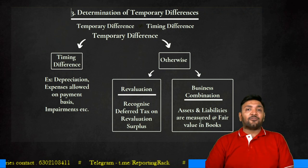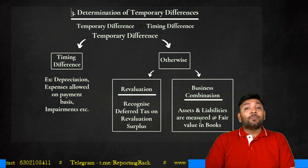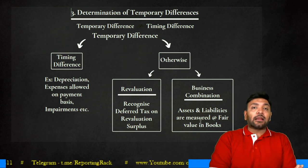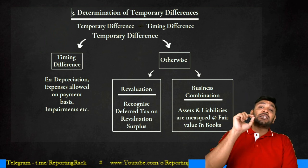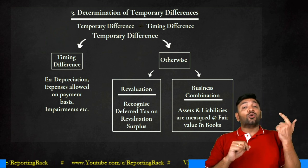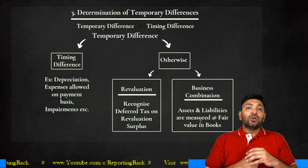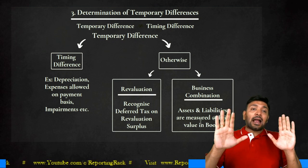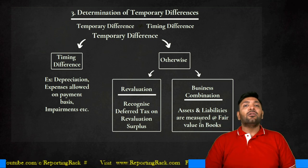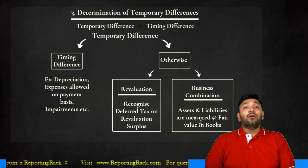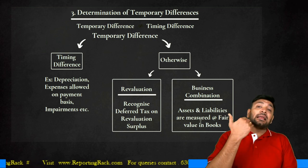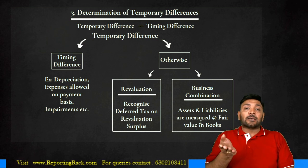Depreciation is a classic example of timing difference. Depreciation should be calculated to the extent of the carrying value of the asset. The rate may differ — for tax purposes it is on a block of assets basis at a particular percentage; for accounting purposes, Schedule II gives useful life and residual value. So depreciation differs between tax and accounting purposes. But ultimately, total depreciation cannot exceed the value of the asset. Such differences in depreciation are timing differences — they increase accounting or taxable income in one year and compensate in subsequent years.